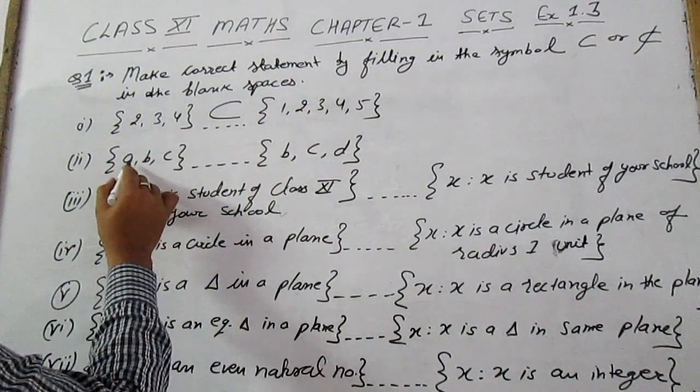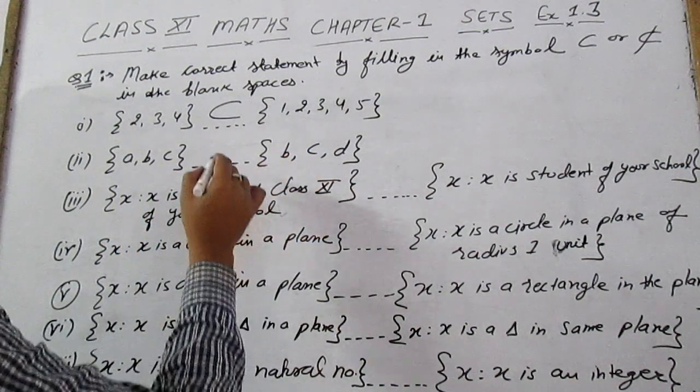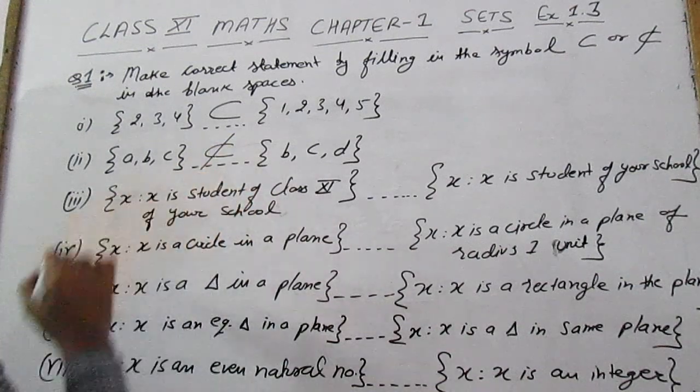Here elements are a, b, c; here b, c, d. 'a' is not present in this set, therefore this is not a subset.